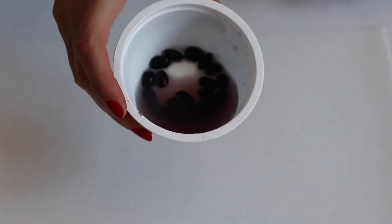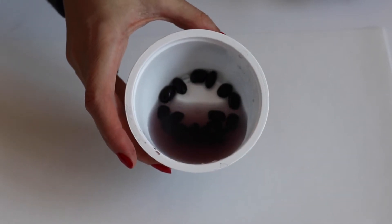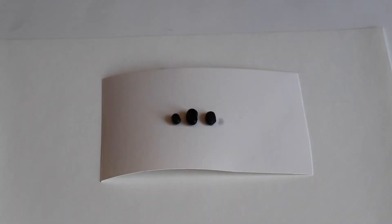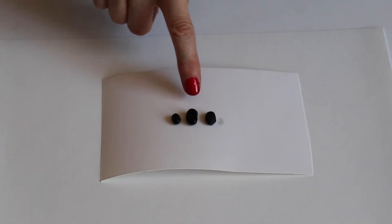First, soak some dry black beans in water overnight. Soak more than you think you will need as some may split. The beans start small and hard, then swell in the water, and then they'll shrink a bit once dried again.